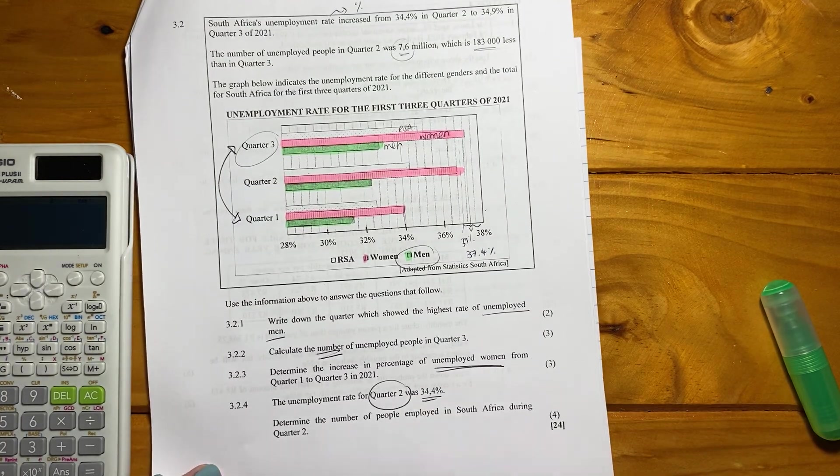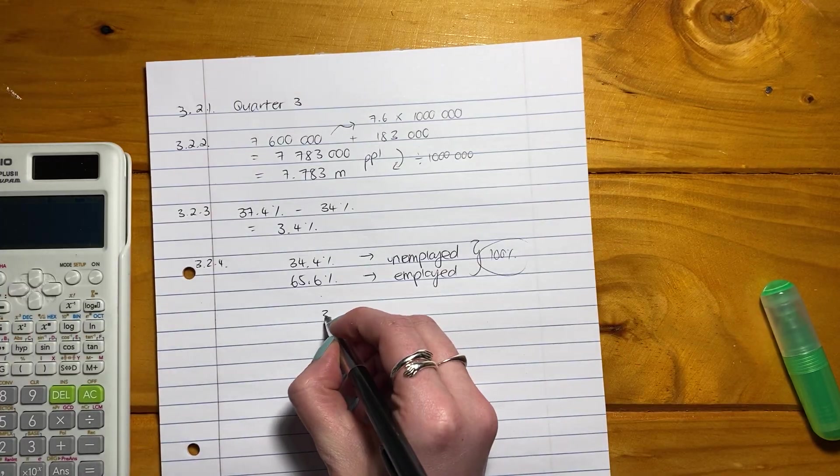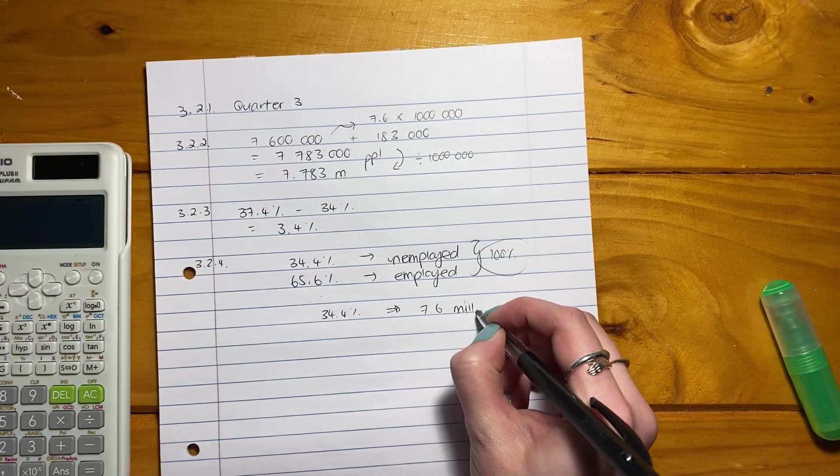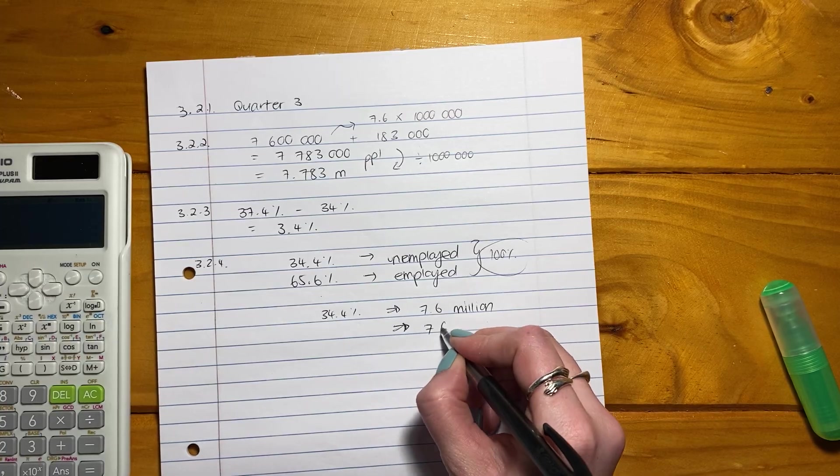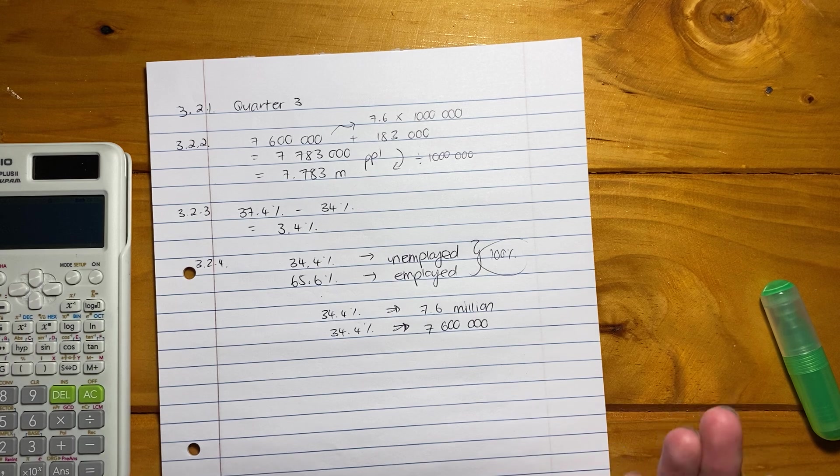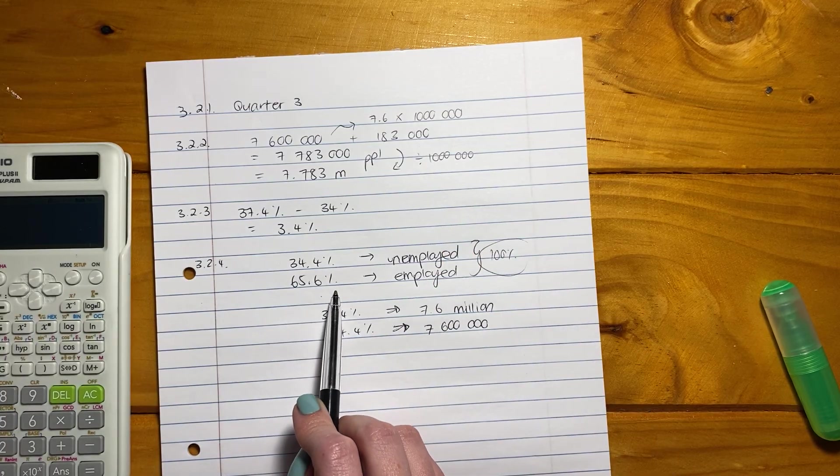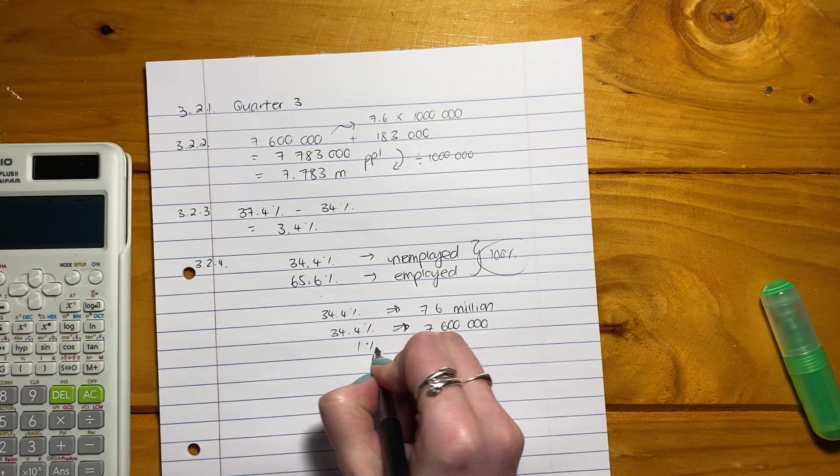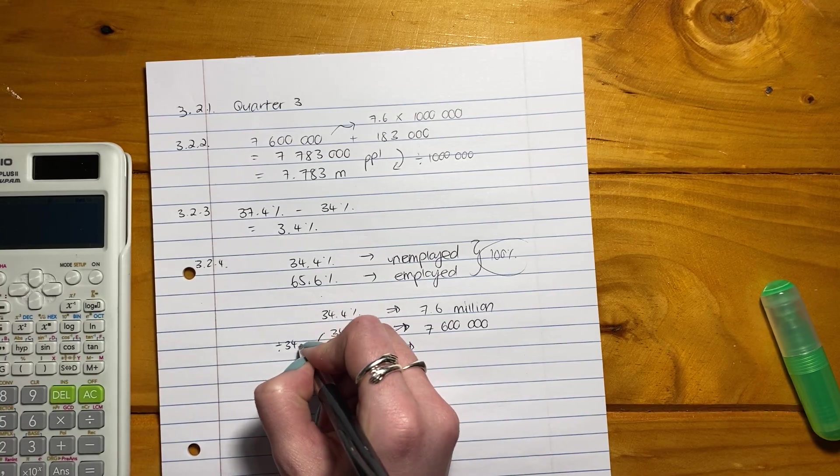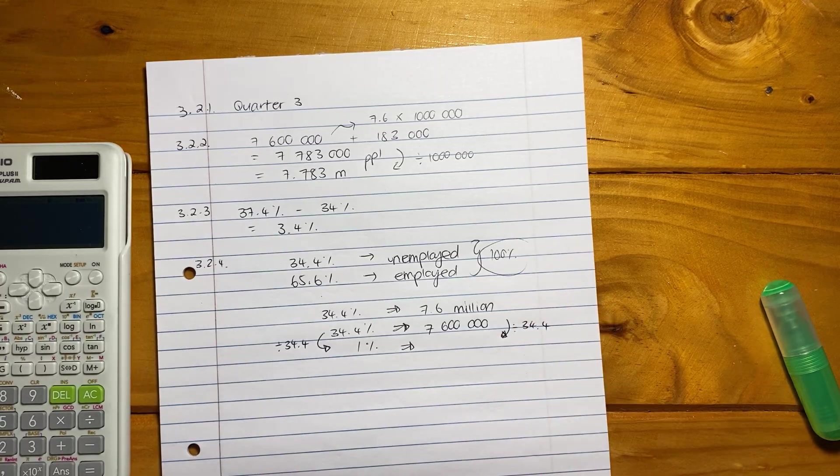So if those are the unemployed people, those are now the employed people. Let's see what else we know. Remember we're talking about quarter two, so be careful that you also know where we're talking about. It told us in quarter two that 7.6 million people were unemployed. So this 34.4% actually equates or in reality is 7.6 million. So it's basically like a form of ratio. So 34.4% gives me that. So actually what we're trying to find is, what is 65.6%? How many people did that give me? Don't stress. Let's just work out what is 1%. Now, how do we get from here to there? Well, we divide by 34.4. What I do to the one side, I have to do to the other side.